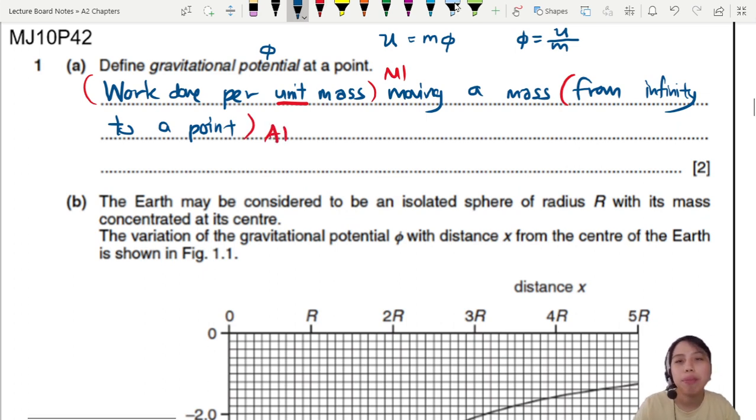So imagine now you are some planet, you're infinitely far away. As you bring this object closer and closer, there's some work done. That's gravitational potential. Okay, move on to the graph.